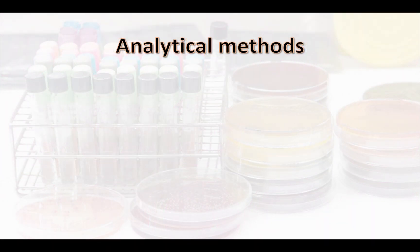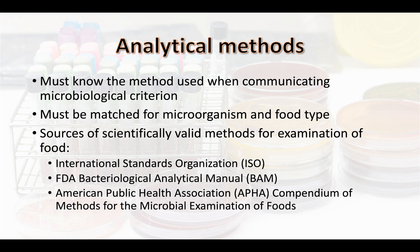Determining the appropriate test or analytical method is very important. As previously mentioned, the analytical method of choice must be validated for the target organism and food type. A method developed for one food type may not work in a different food matrix. There are several sources of validated methods including ISO, BAM, AOAC, and others. A critical factor to understand when reporting and interpreting microbial test results is the unit in which the result is reported.